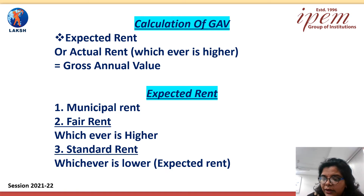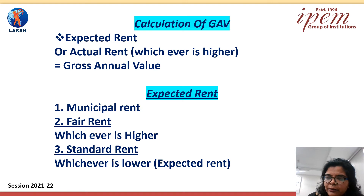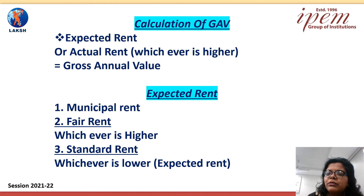In sequence: first we write municipal rent, then fair rental value, then standard rent, then actual rent. We compare municipal rental value with fair rental value and take the higher term. Then we compare the higher term with standard rent — whichever is lower we call expected rent. Then we compare expected rent with actual rental value, and whichever is higher we call the gross annual value of the property.